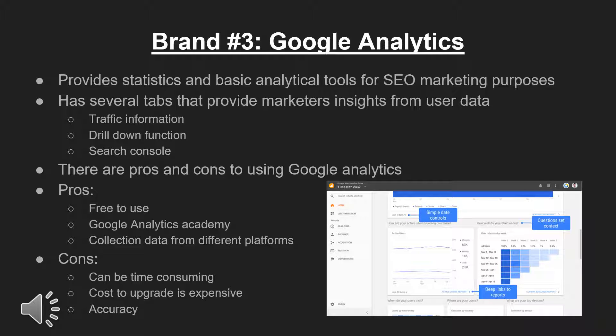Google Analytics provides statistics and basic analytical tools for SEO marketing purposes, with several helpful tabs that provide insight from user data. One of the great benefits is that it tracks and reports website traffic. Users have a drill-down option to see which specific search engines are driving the most organic traffic. There is also an option to integrate with the search console to see how landing pages are performing, which is essential for SEO.